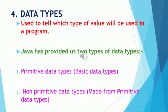The fourth part of a Java program is data type. Data types are used to tell which type of values will be used in our program. Java has provided us two types of data types: first, primitive data types, which are also the basic data types of Java; and second, non-primitive data types, which are made from these primitive data types. In your class, you will concentrate mainly on primitive data types.